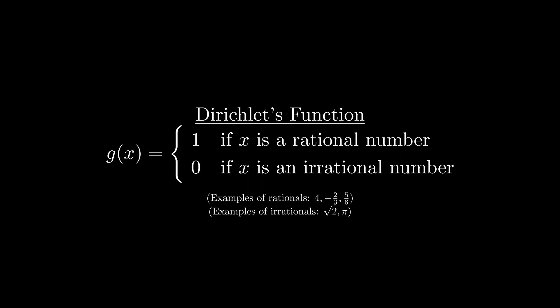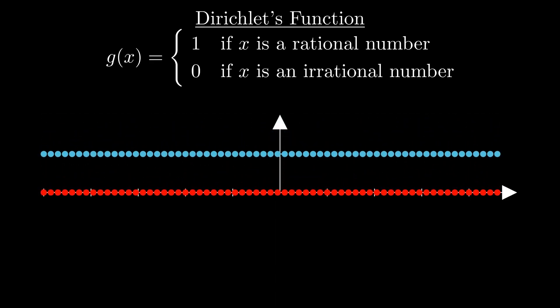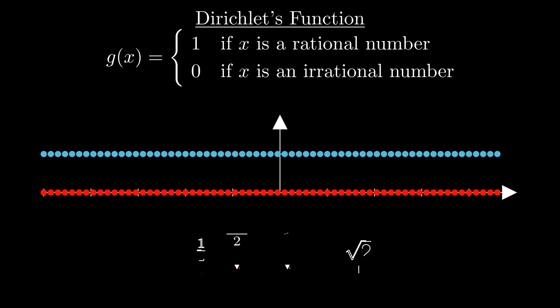Since rational and irrational numbers are both real numbers, this function can be plotted on a standard two-dimensional graph like this, with the function values of rational number inputs in blue and those of irrational number inputs in red. However, the rational and irrational numbers are dense in the real numbers, meaning that between any two different real numbers, we can find a rational number and we can find an irrational number. Therefore, this graph is just an approximation, as between any two points on this graph, there exists an infinite amount of rational and irrational numbers.